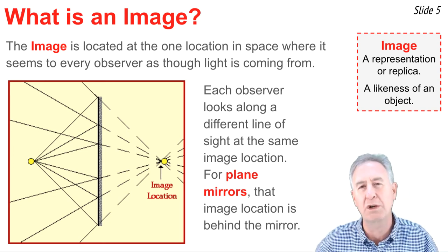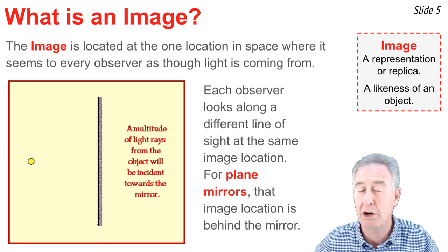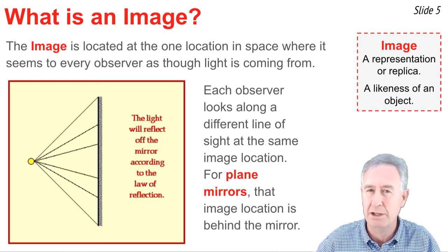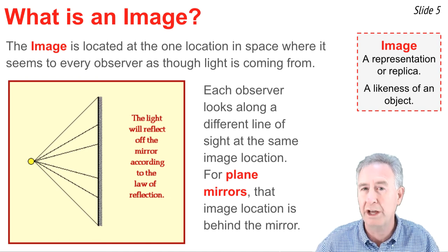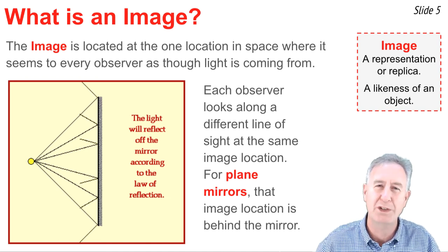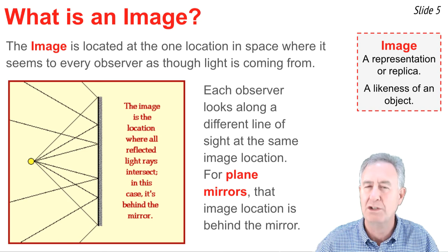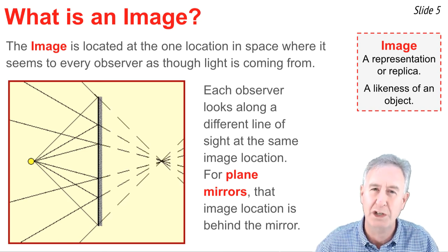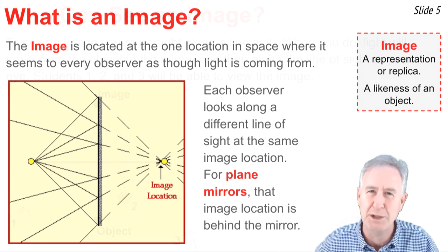For plain mirrors, that image location is behind the mirror and as far behind it as the object is in front of the mirror. This image is what I refer to as the one location in space where it seems to every observer as though the reflected light is coming from. And when you look at that location, you see a likeness or representation of the object.